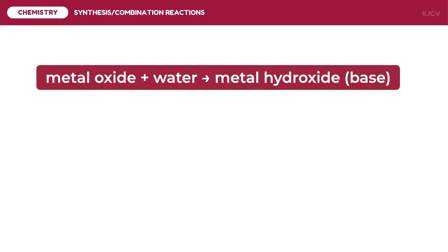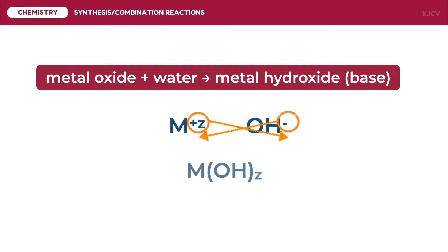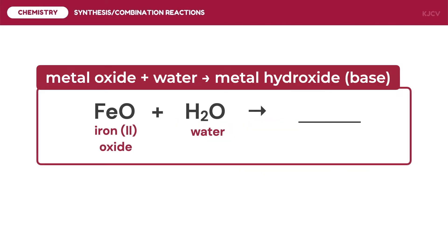The third synthesis reaction is the reaction between a metal oxide and water. The metal from the metal oxide dissociates into a cation to bond with the hydroxyl ion of water, forming a metal hydroxide. This product is a base since the metal oxide is a basic anhydride. A technique for identifying products is to copy the name of the metal and attach the word hydroxide.